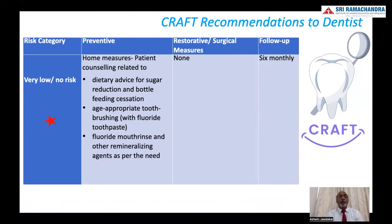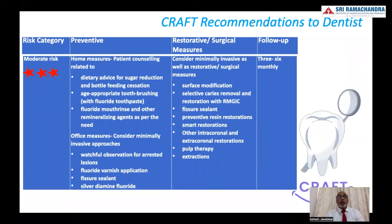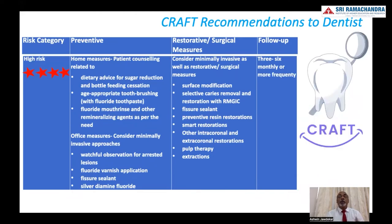In the category of very low or no risk, only home measures could suffice and there is no need to extend much care. As the risk increases, some office measures become relevant and some restorative and surgical measures could be necessary. If the risk further increases to a moderate level, there could be a necessity for more restorative and surgical options — not only home and office preventive measures, but restorations and many minimally invasive procedures. Where caries has led to pulpal or apical pathologies, pulp therapies and extractions could also be necessary. The last column gives guidance about the frequency of follow-ups, and as the risk increases, the necessity for frequent follow-ups also increases.